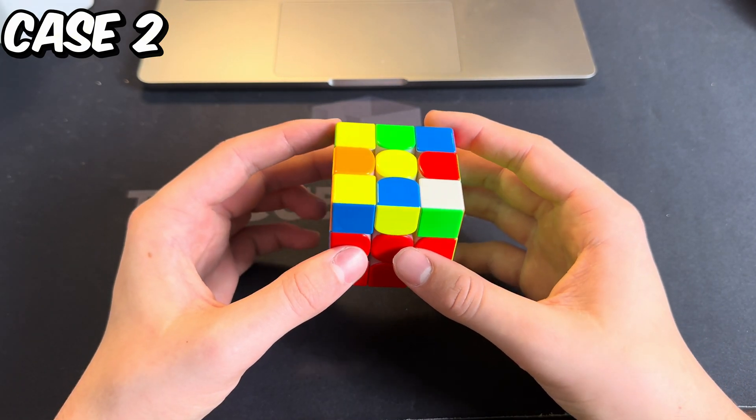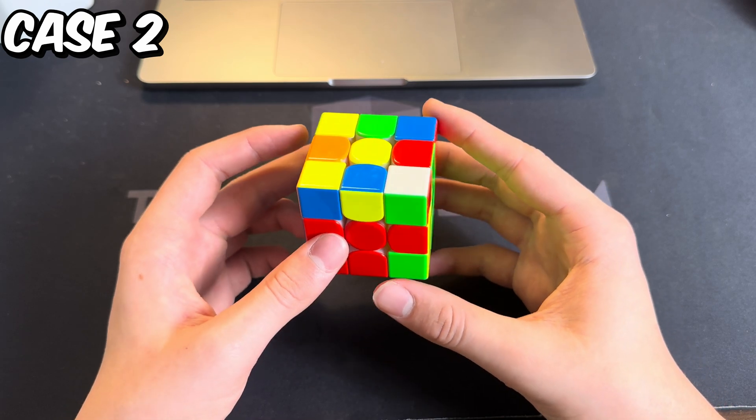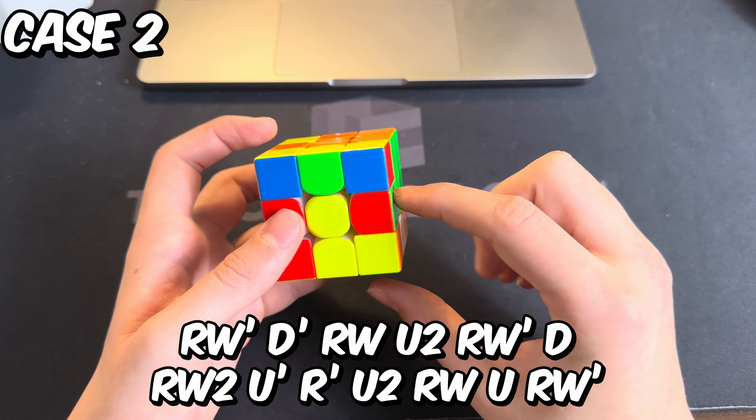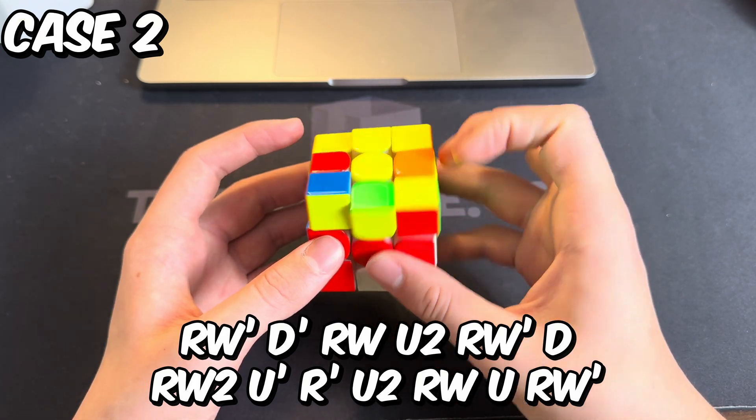This one is a bit longer and more complex, but it can be done really fast. You start off by doing wide R prime, then D prime, now wide R, U2, wide R prime...